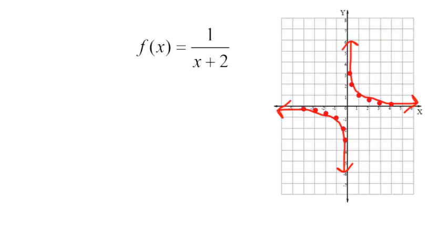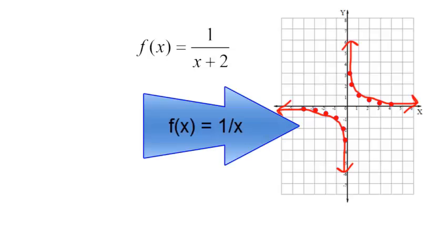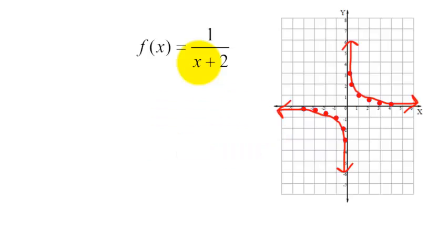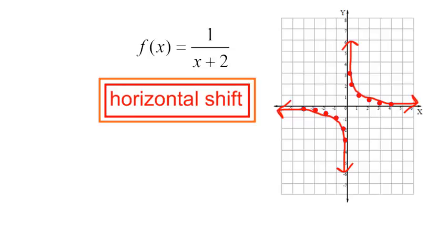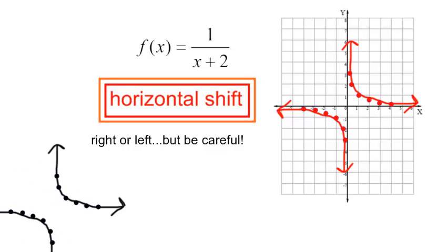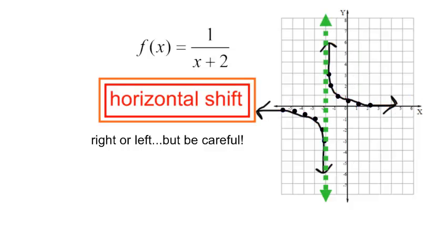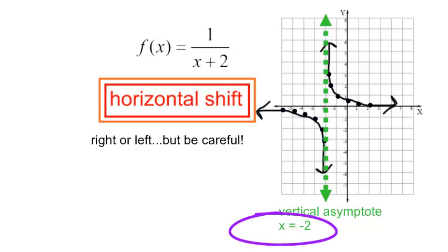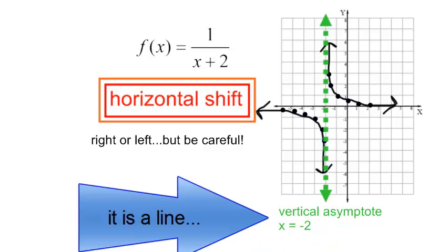Now I have the graph f of x equals 1 over x plus 2. This starts with the basic function 1 over x, but this is shifted. If you remember from transformations of functions, this is shifted not to the right 2, but to the left 2. This is a horizontal shift — right or left — but you have to be careful, because it's opposite of what you may think. So this graph is shifted to the left 2 spaces, giving a new vertical asymptote x is equal to negative 2. An asymptote is a line, so make sure you say x is equal to negative 2.